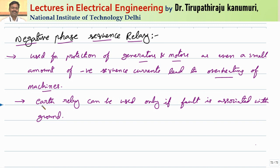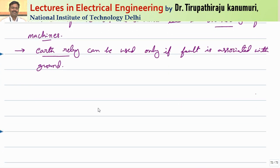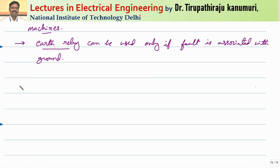We have already discussed the earth fault relay. Whichever faults are related to earth, it will detect. But the problem is if the fault is not connected to the earth, or if there is unbalanced loading on your machine, these relays cannot operate even for small values of unbalance. If the loading is less than the rated load and there is a small unbalance, this earth fault relay or overcurrent relay cannot detect those negative sequence components. To avoid this problem, we go for a bridge type circuit — there are two types of circuits available.